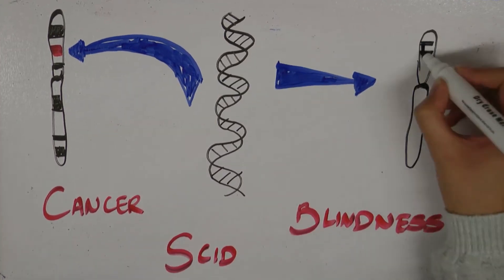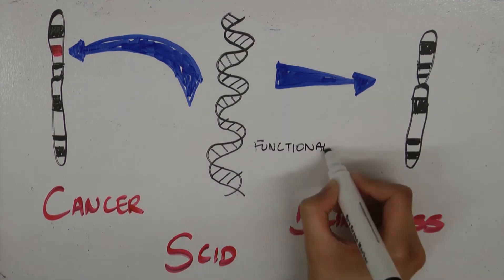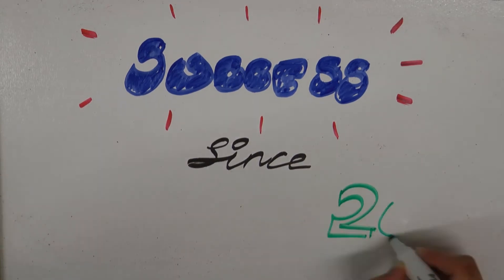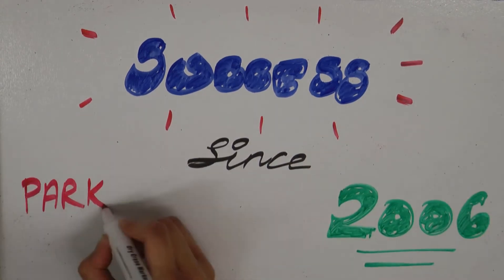The functional genes are used to replace defective or missing genes. Gene therapy has had clinical success since 2006 for diseases including Parkinson's and Leukaemia.